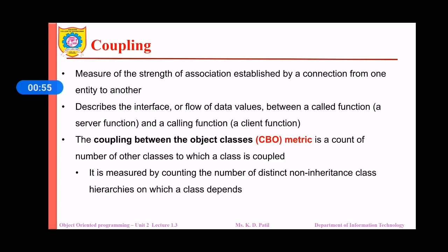The coupling between object classes, that is the CBO metric, is a count of the number of other classes to which a class is coupled. For example, if class C uses the methods or variables of three other classes, the CBO metric for class C will be three. Similarly, if three classes are using the methods or variables of class C, the CBO metric will also be considered as three.